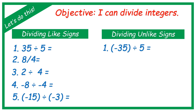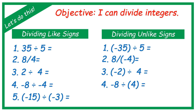Now let's have examples of unlike signs. We have: negative 35 divided by positive 5, 8 divided by negative 4, negative 2 divided by 4, negative 8 divided by positive 4, and 15 divided by negative 3. As you can see, these given numbers have different signs — one is positive and the other is negative, or vice versa. I'm going to give you time to answer the following. If you need more time, you can pause this video.